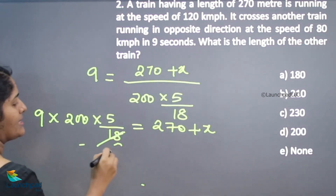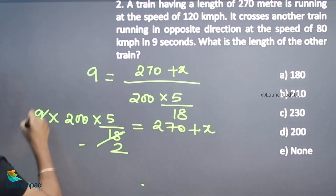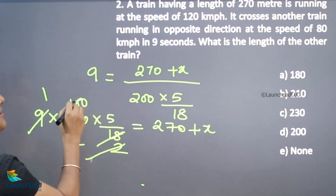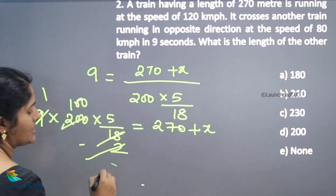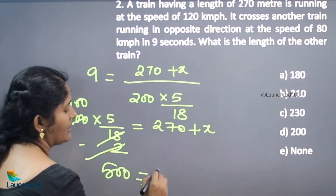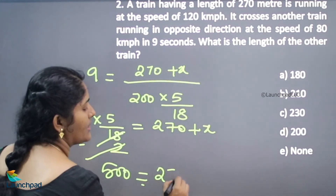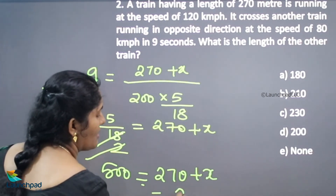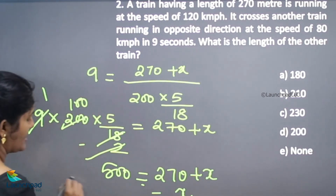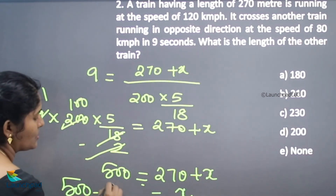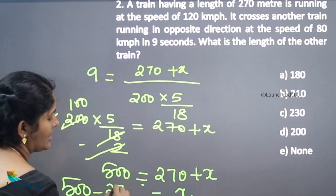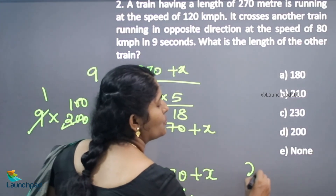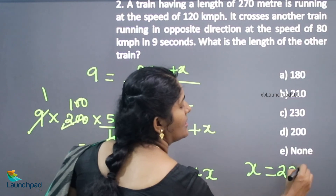Calculating: 2 nines are 18, 1 nine is 9 — the 9 and 18 cancel, leaving 100 times 5, which is 500. So 500 equals 270 plus x. Therefore the length of the other train is 500 minus 270, which equals 230 meters.